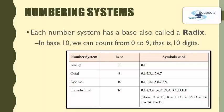In the previous episode we talked about the binary number system and the decimal number system. In the binary system there were two digits and in the decimal number system there were 10 digits. The number of digits available in any number system is known as the base or radix. The base or radix of the binary system is 2 and the base of the decimal number system is 10, as it contains 10 digits from 0 to 9.